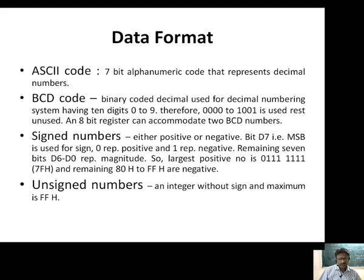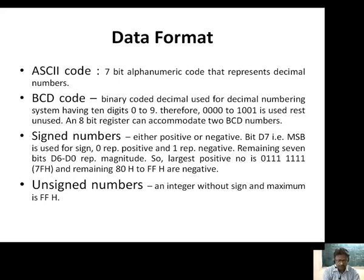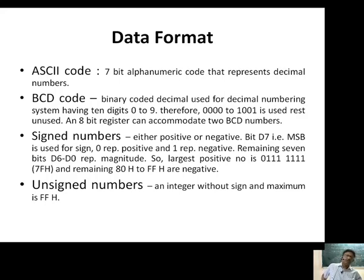The second data format is BCD — Binary Coded Decimal — used for decimal numbers. Decimal numbers run from 0 to 9, so we need only 4 binary digits to represent those 10 digits (0000 to 1001). The combinations 1010 through 1111 remain invalid in BCD. Since 8085 registers are 8-bit and one BCD digit requires 4 bits, one register can represent 2 BCD digits.